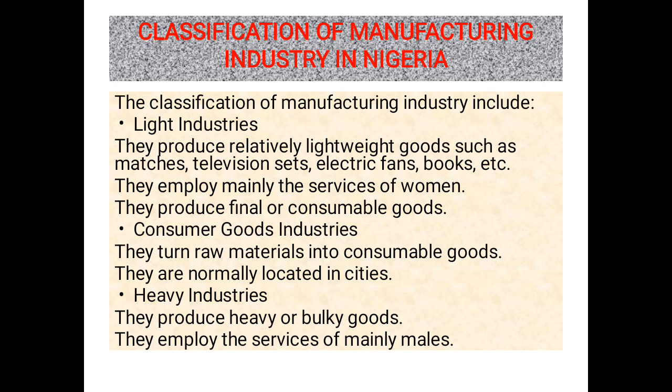Secondly, we can classify Nigerian industry based on consumer goods industry. They turn raw materials into consumable goods. They are normally located in the city. These industries are also called recreational industries — they recreate what has already been existing into another commodity or a joint commodity. Then the next one is heavy industry. They produce heavy or bulky goods. They employ the service of mainly male workers, so most Nigerian industries are embarked on by male activities. Female participation is scarce and that is why it is gender based.